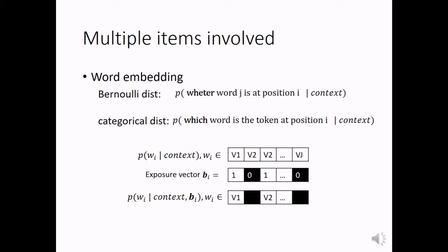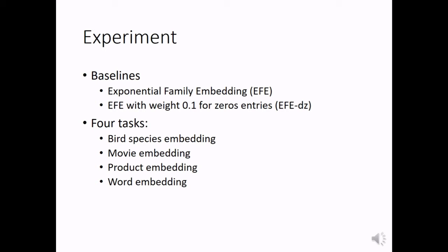Then, we evaluate our embedding model through experiments. We have two baselines: the exponential family embedding model, and the one with zero entries manually downweighted with weight set to 0.1. And we evaluate all models on four embedding tasks shown below.